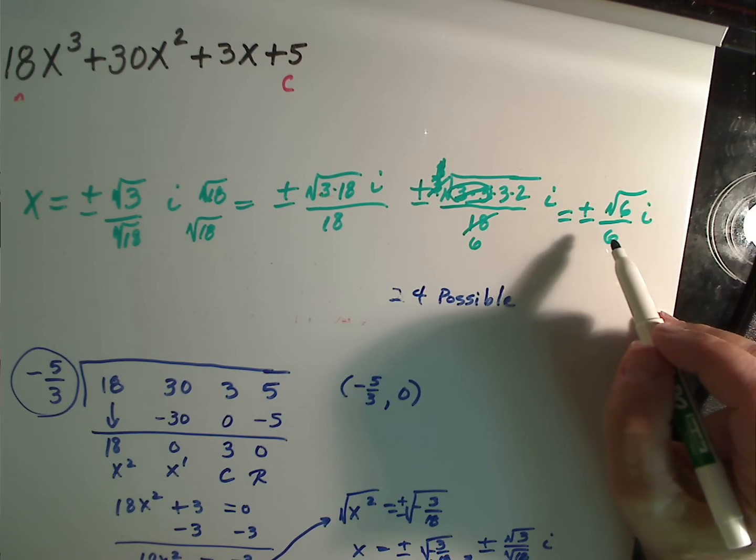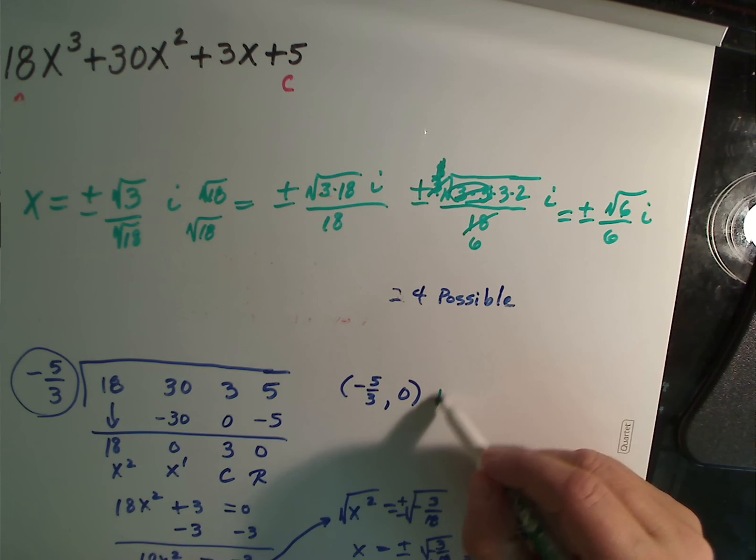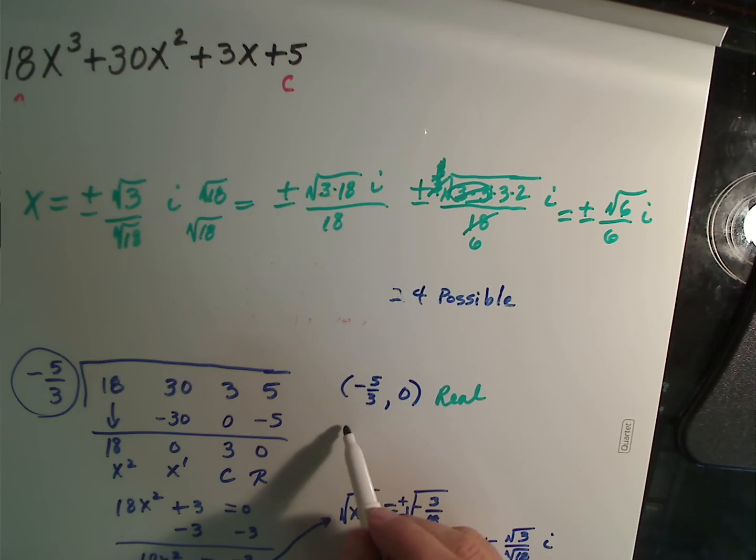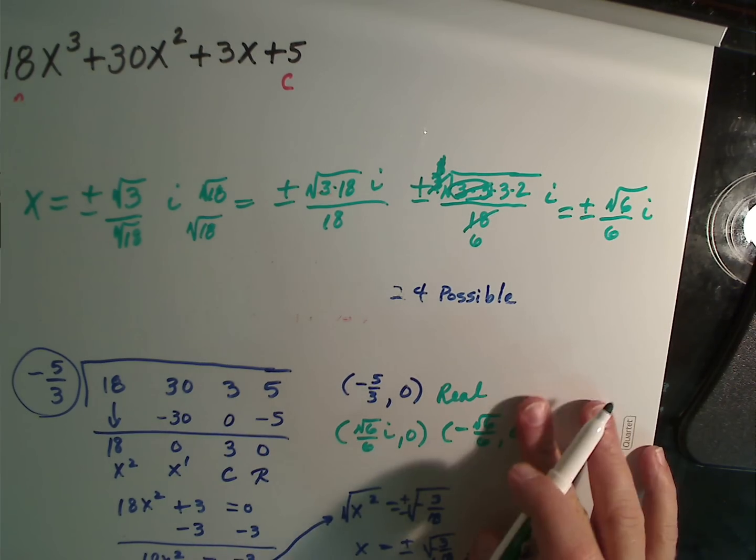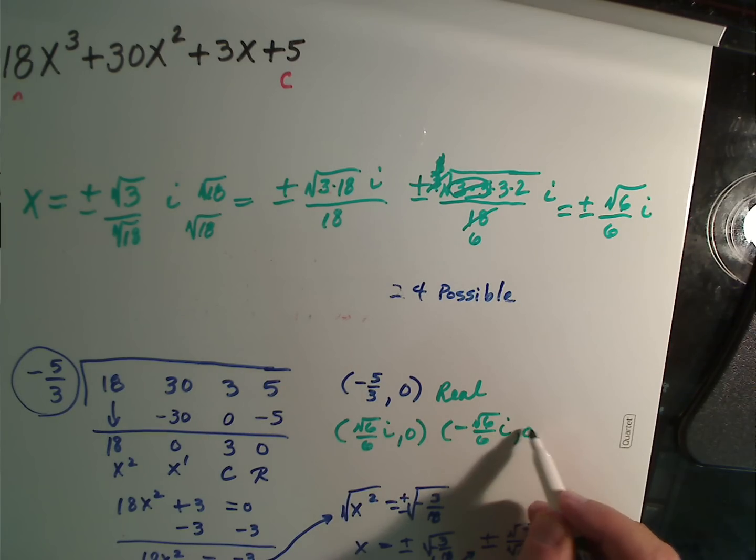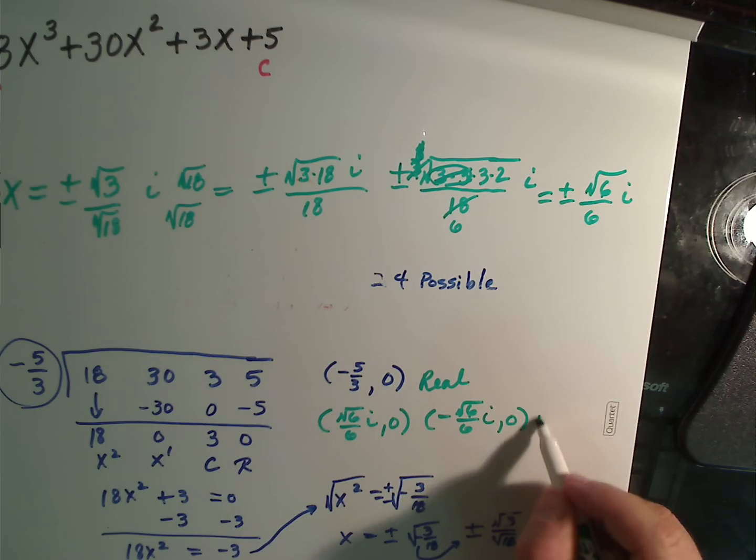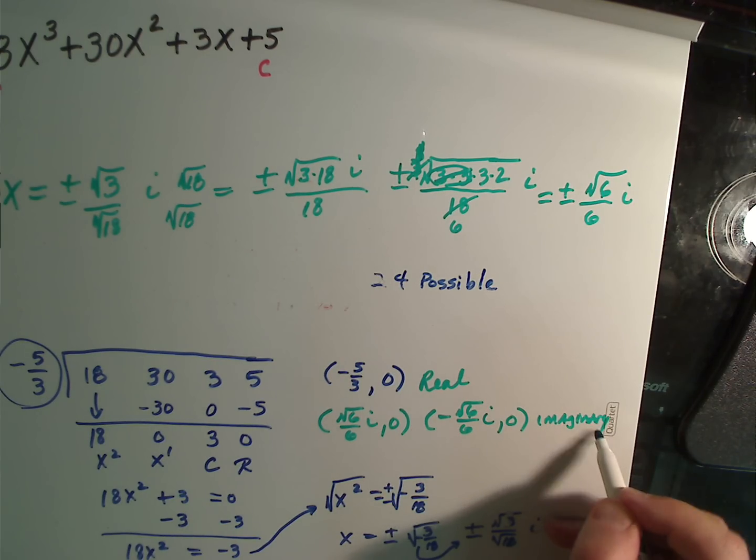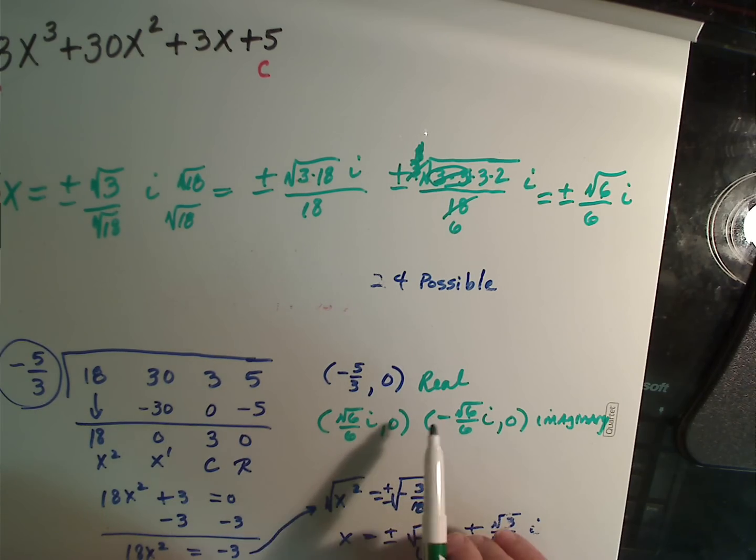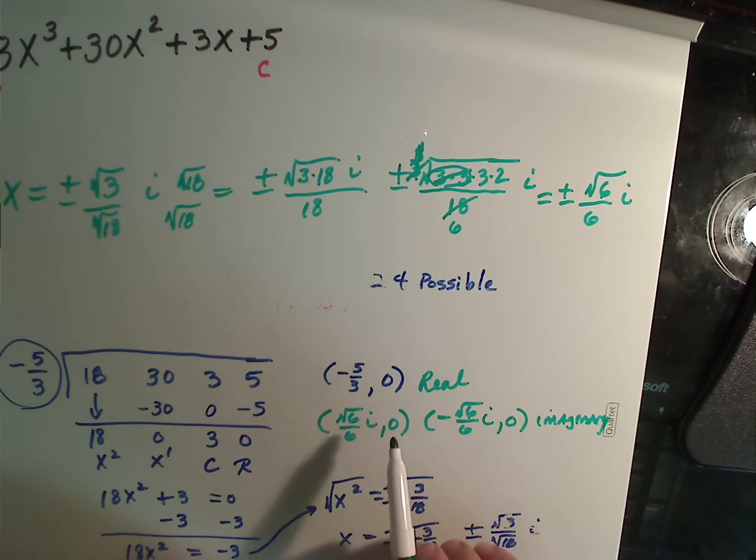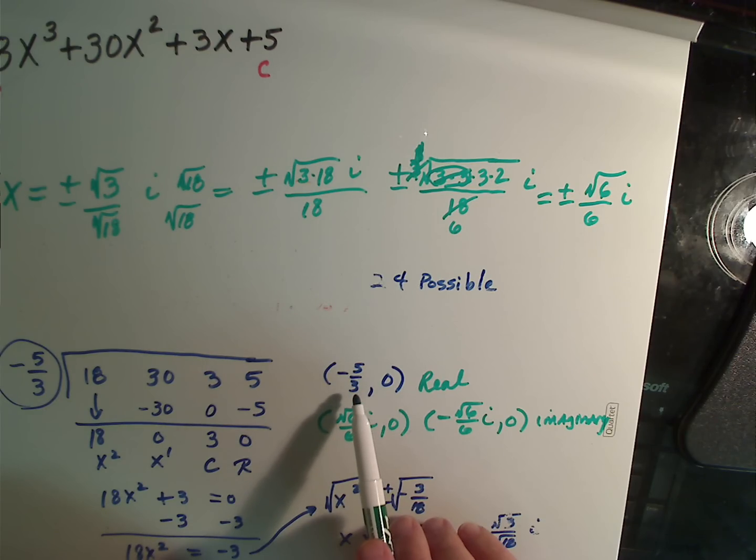And guess what? They are imaginary. So, I have one real root, and I'm going to have two imaginary roots. So, I have rad 6 over 6, i, or rad 6 over 6 comma 0, and negative rad 6 over 6, i comma 0. So, I've got two imaginary. And actually, these are complex. Nope, sorry. They are, yeah. We'd say they are imaginary. They don't have a real part to them. So, they're pure imaginaries. But here you go. There's your three equations.